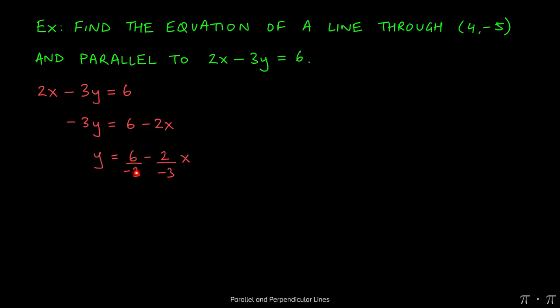This fraction simplifies to negative 2, and then negative over a negative here makes it just the positive. 2 over 3 is already in reduced form, we cannot do anything else with it.